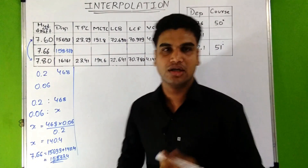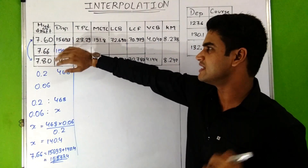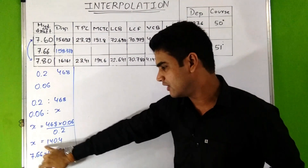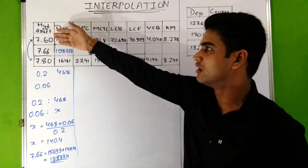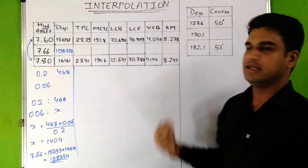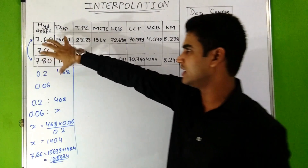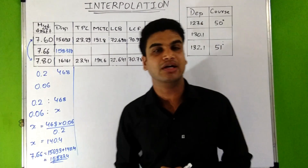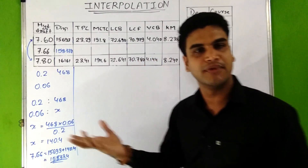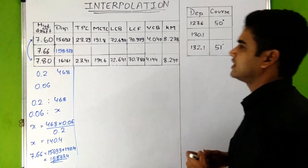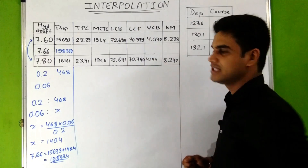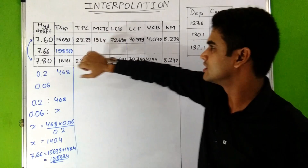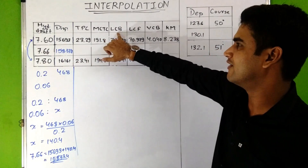Since the displacement was increasing, we added the value of x to the previous one. However, if a value is decreasing, you subtract x from the previous value instead. Let's take the LCB as an example. For a draft of 7.6 meters, the LCB value is 72.690, and for a draft of 7.8 meters it is 72.641.